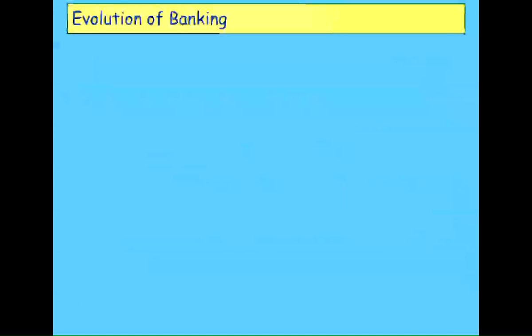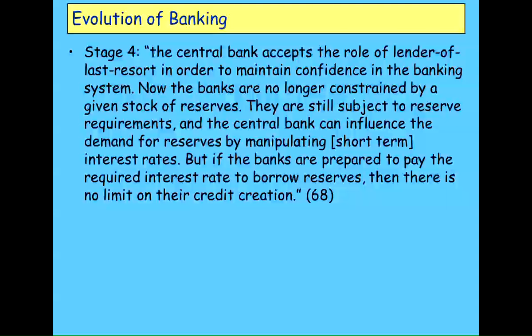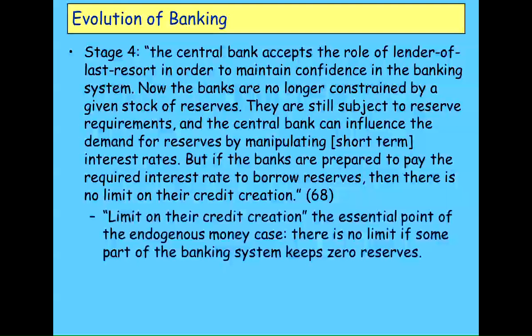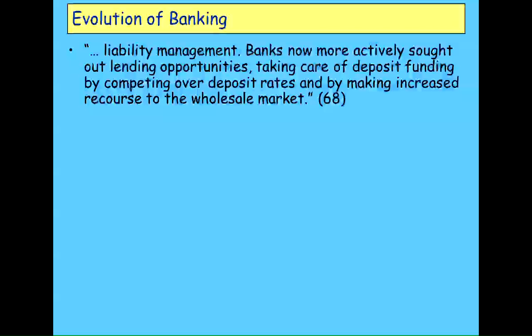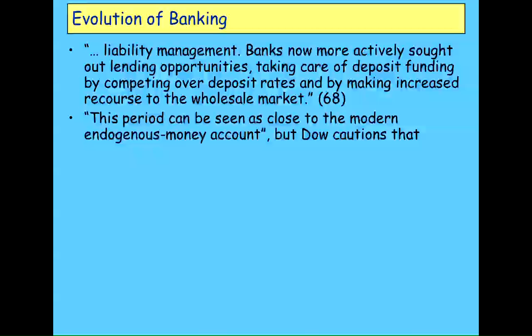As a progression, in stage four the central bank becomes the lender of last resort, meaning commercial banks are no longer constrained by the stock of reserves. Stage five is liability management — a new element in how the monetary system functions. That's where banks not merely issue loans and create deposits, but also create securities, sell those, buy and sell money on the wholesale market, or buy and sell repurchase agreements. So that's more endogenous than what Keynes was talking about.